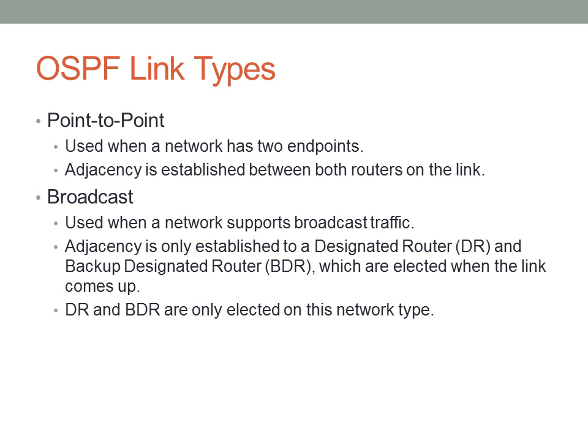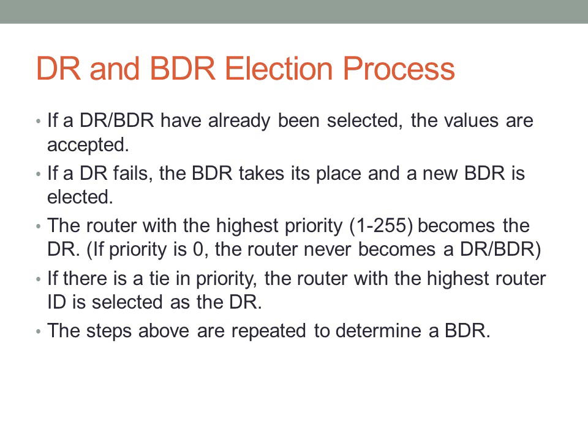The DR and BDR are only elected when you have a broadcast network. Here's the election process: if a DR and BDR have already been selected, the values are accepted — once elected, they won't change until one goes down. If the designated router fails, the backup designated router takes its place and a new BDR is elected. If no DR and BDR have been selected, the router with the highest priority becomes the DR. Priority isn't normally set by default, but it can be configured to force a DR or BDR. If there's a tie in priority, the router with the highest router ID becomes the DR. The same steps are repeated to determine a BDR.